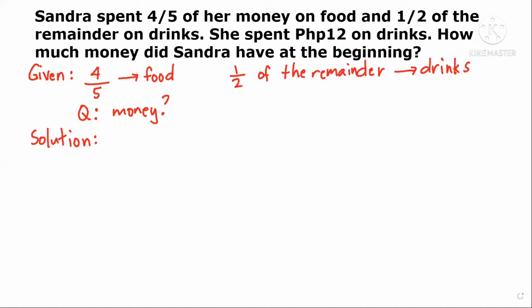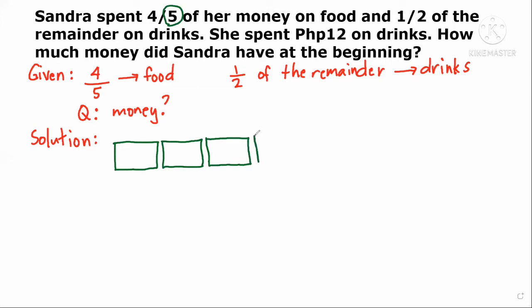Since the denominator is five — four-fifths — we draw five bars, all the same size: one, two, three, four, five pieces.